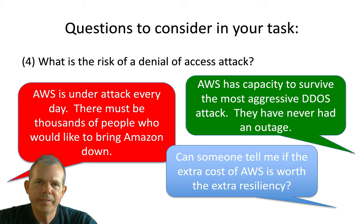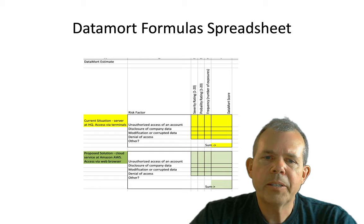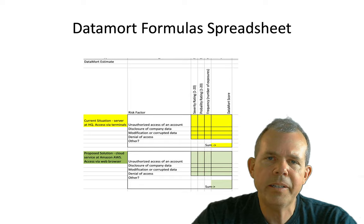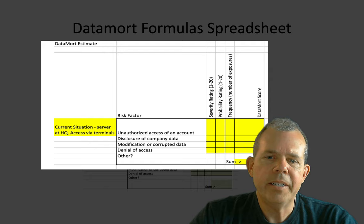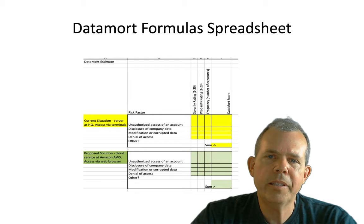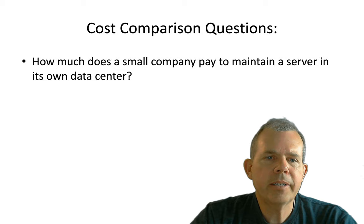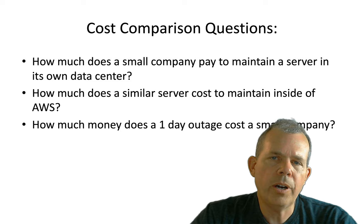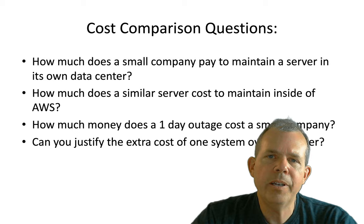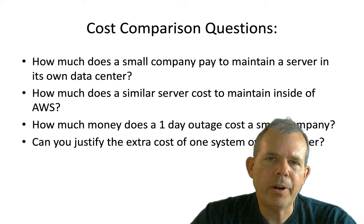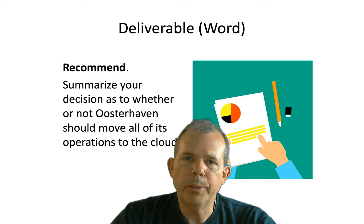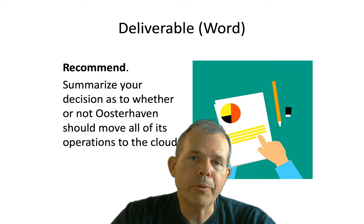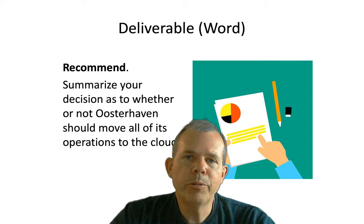For this assignment, I'll give you a spreadsheet and ask you to come up with some estimates — just as we did estimating micromorts, the likelihood of death, and the probability and severity of events. We need to ask: how much does a small company pay to maintain its servers in its own data center, how much do similar costs run on Amazon's side, and how much does a one-day outage cost a small company? Can you justify the cost of one system over the other? The final deliverable will be a document summarizing our decision, backed by research and estimations, to find out if Osterhaven should move their servers or keep them where they are.